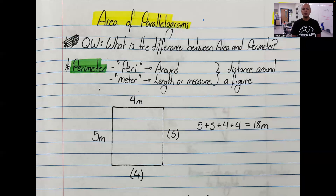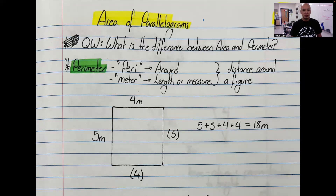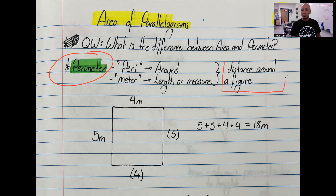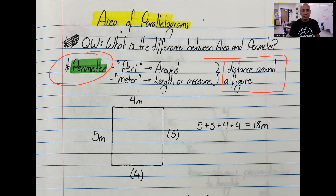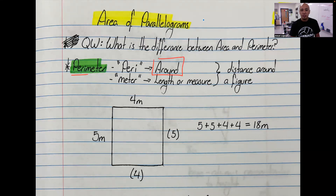Before we go into that, I want to review the difference between area and perimeter. Perimeter can be thought of as the length or the distance around a figure. The prefix 'peri' literally means 'around,' and 'meter' means length or measure — so perimeter is the distance around a figure.